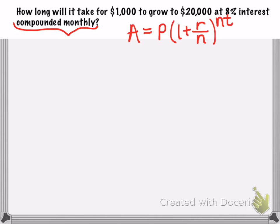Where n is the number of times the interest is compounded in one year. So if the interest is compounded monthly, we know that n is equal to 12.